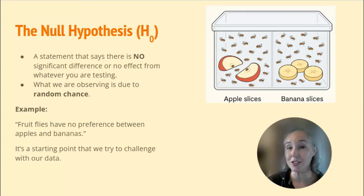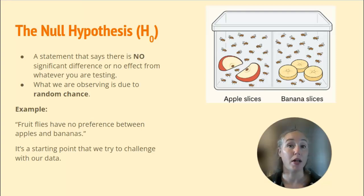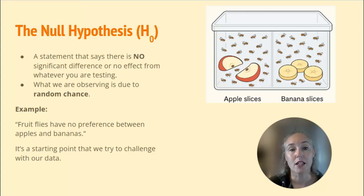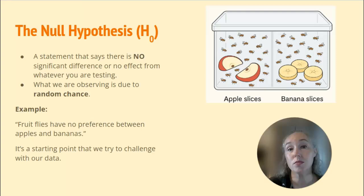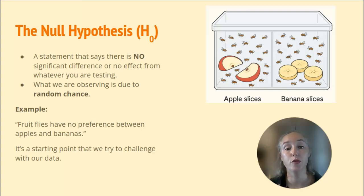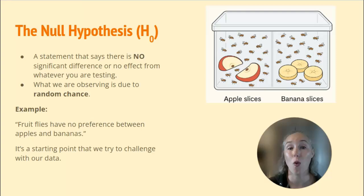But in AP Biology, we test the null hypothesis. The null hypothesis, or H sub zero, is basically the statement that there is no difference or no effect — that there's no difference in whatever you're testing and that whatever we're observing is just due to random chance. So in this example, the null hypothesis would be that fruit flies have no preference between bananas or apples.